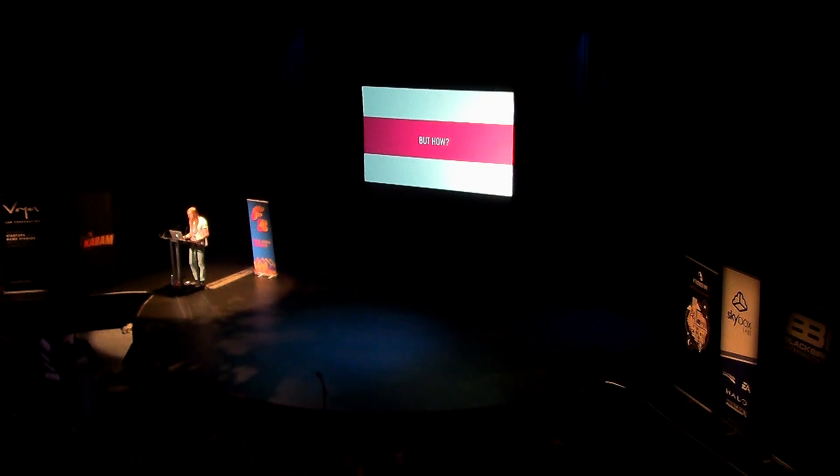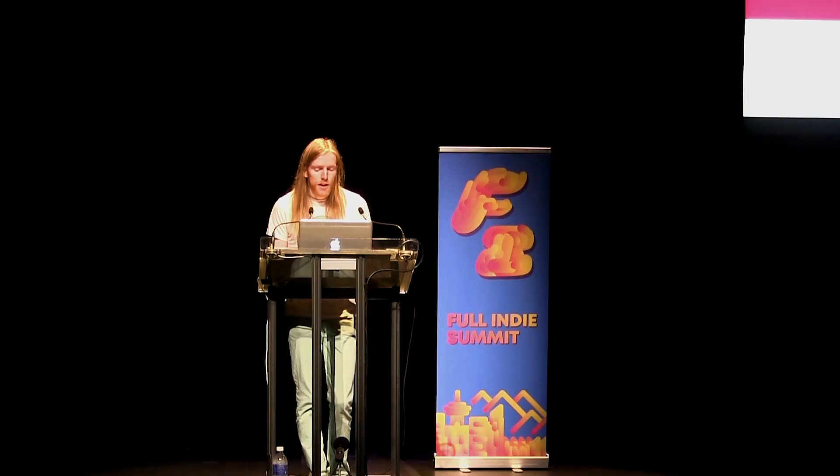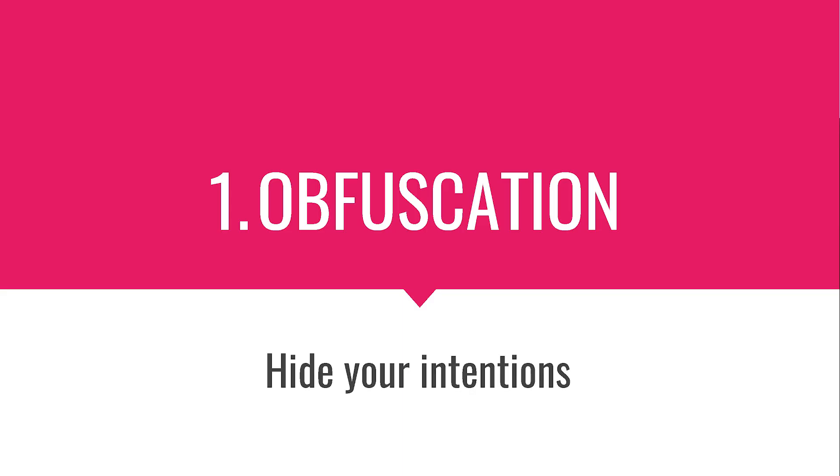So we had the story we wanted to tell and we had this message we wanted to get across. The next thing to do was to figure out how to get our audience to actually take the message on board. I've identified three things that we tried to do that we thought were important in order to give Genital Jousting a better chance at landing its message. Three things for making a secretly persuasive game. Thing number one is obfuscation — hiding your intentions.